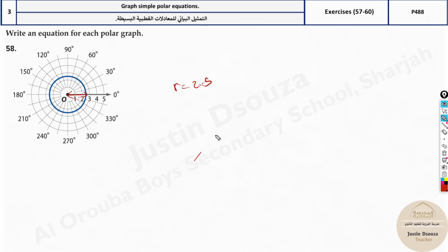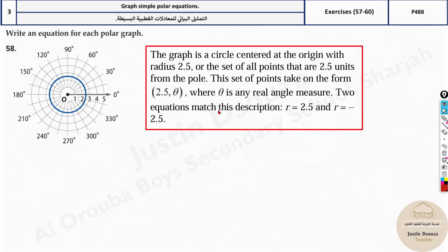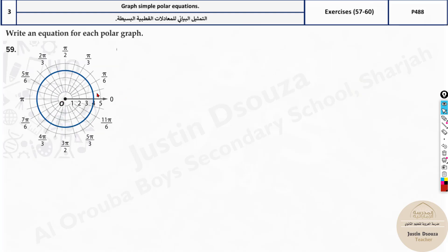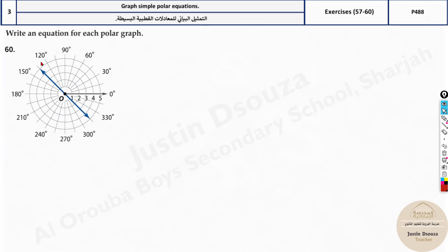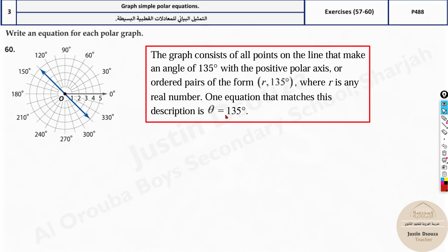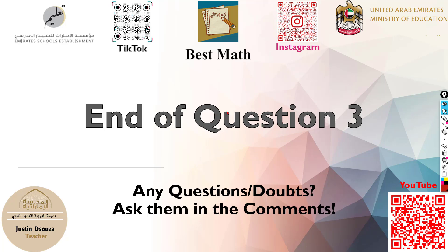You can just remember: if it's a straight line, theta equals something. If it's a circle, r equals something. So here r is either +2.5 or −2.5. For this next one, r is 4 plus or minus 4. And over here, the angle is between 150 and 120, so it will be 135 degrees — theta = 135. That's another simple and easy topic.